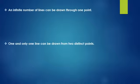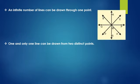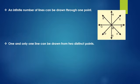An infinite number of lines can be drawn through one point. One and only one line can be drawn from two distinct points.